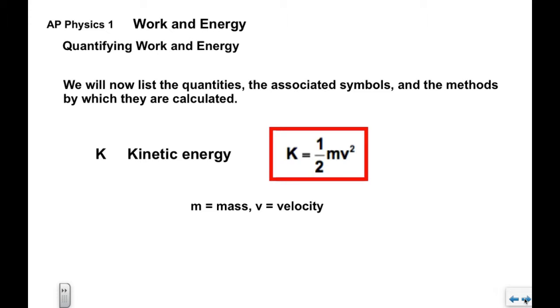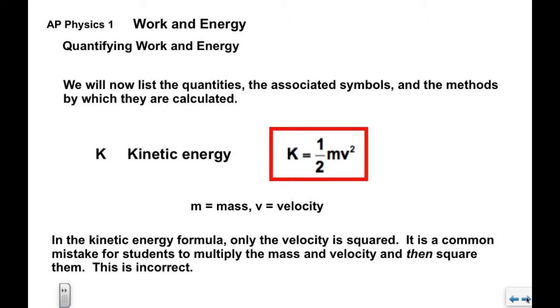The m is the mass that we're familiar with and v is velocity. Very simply, one-half mv squared. We see in the formula that only the velocity is squared. It's a common mistake for students to multiply mass times velocity and then squared. That's wrong. One-half times mass times velocity squared.